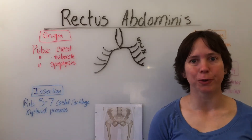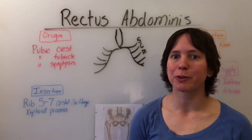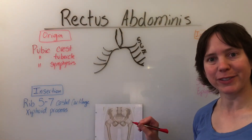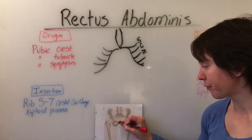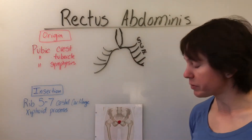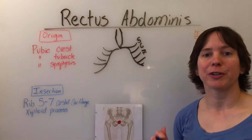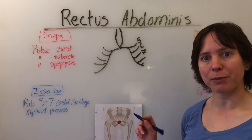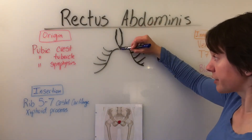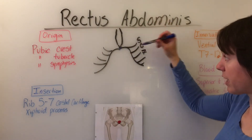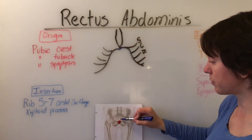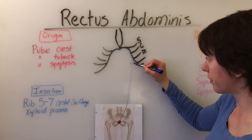The rectus abdominis is a vertical muscle that originates down on the pelvis on the pubic crest, symphysis, and tubercle. It will move superiorly to insert on the ribs five through seven costal cartilage and the xiphoid process.